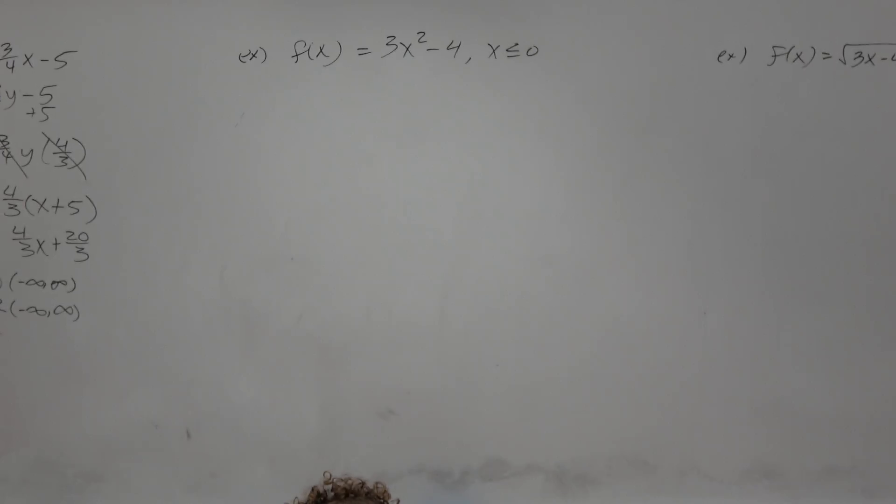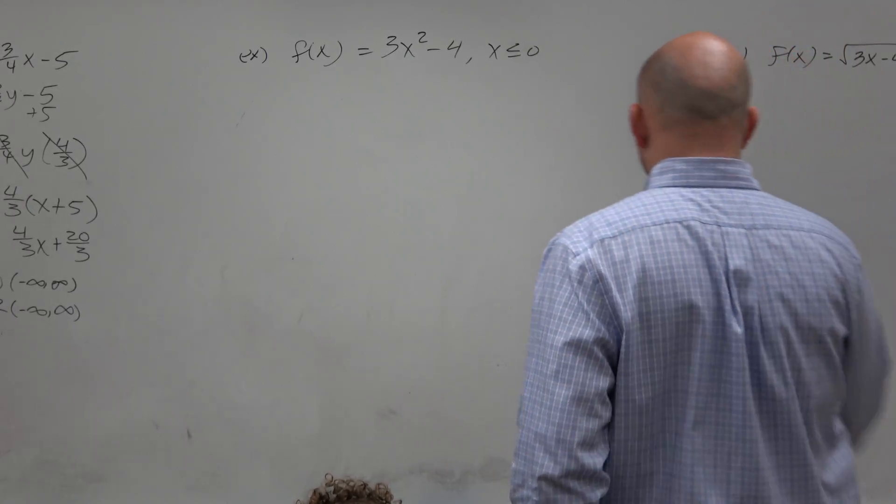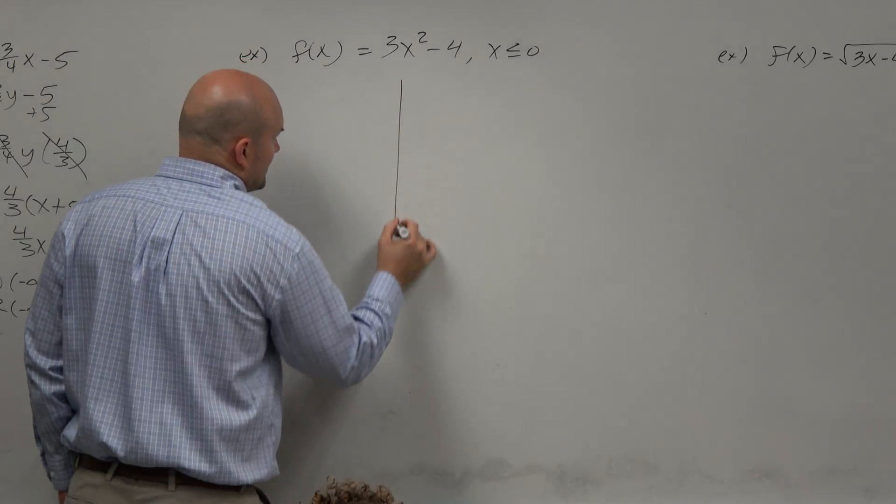Is, yeah, 1 to 1. So when you guys look at 3x squared minus 4, you guys should know what this graph looks like.